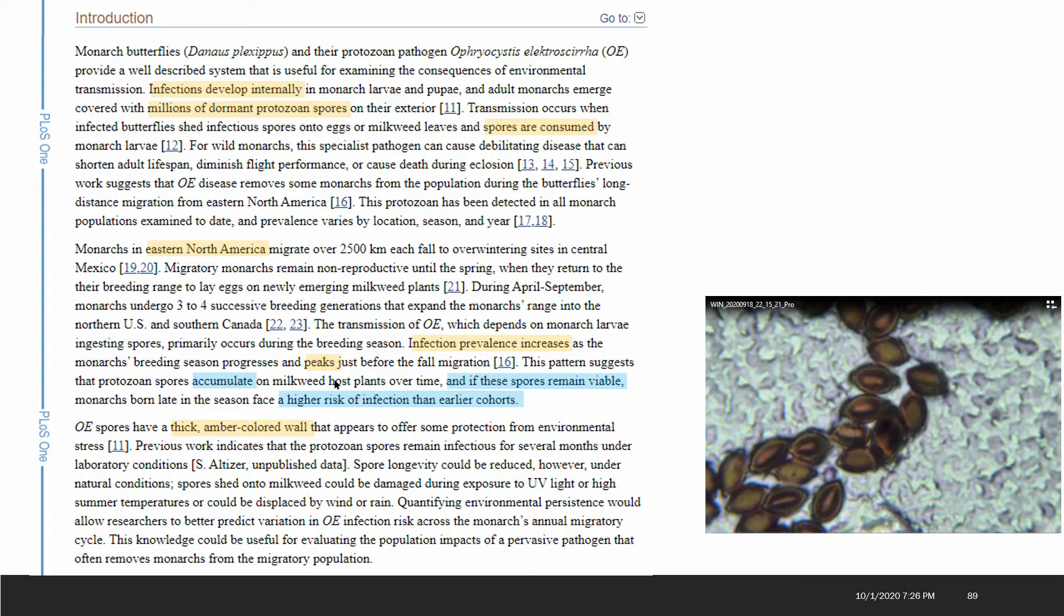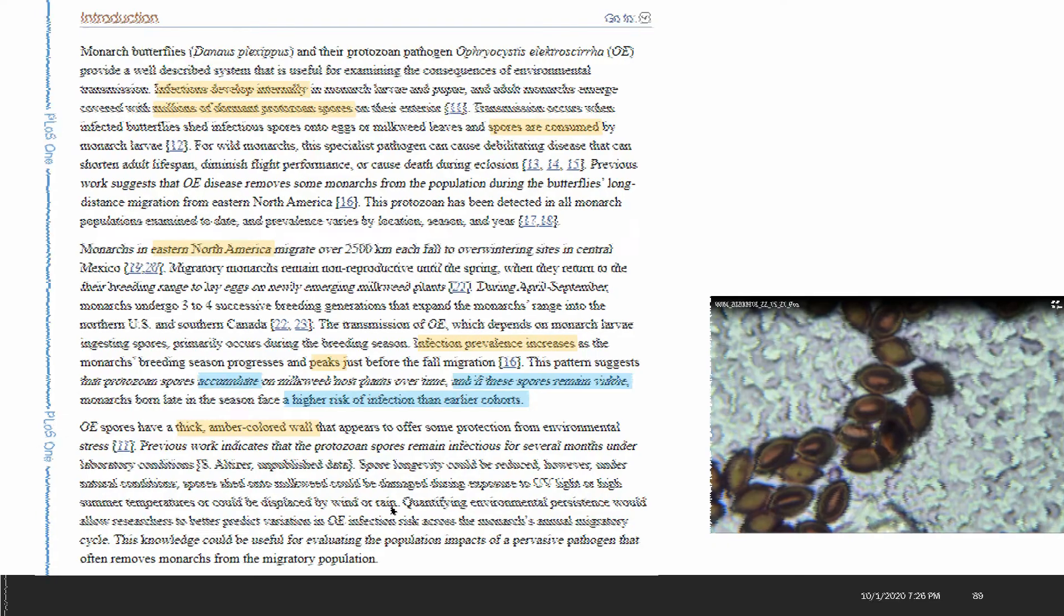One theory is that they would accumulate on the milkweed leaves. Another would be that they don't necessarily accumulate over time as much as they just remain on the host plant for the rest of the season from the one butterfly. There's a mention: OE spores have a thick amber colored wall that appears to offer some protection from stress. This amber color would make sense that it would be protection against UV. If this coating could be broken down it would make the contents probably more susceptible to UV light. It could be heat sensitive or it could be mechanically displaced by wind or rain.